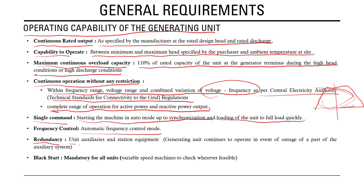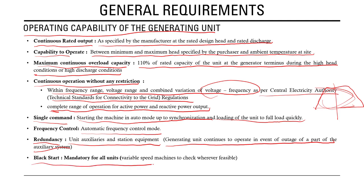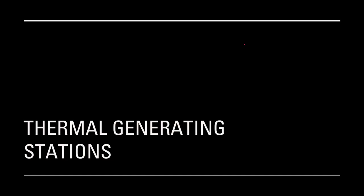For redundancy, generating units should continue to operate in the event of an outage of part of the auxiliary system, with sufficient redundancy maintained. It has been mandated that all hydro units must have black start facility, except for variable speed machines where feasibility needs to be checked.